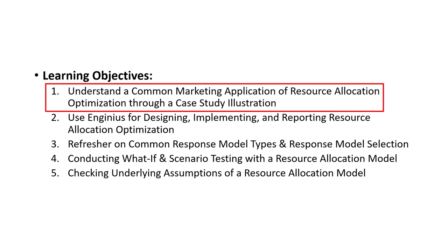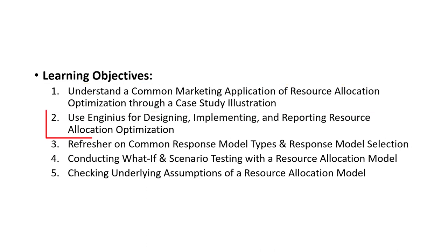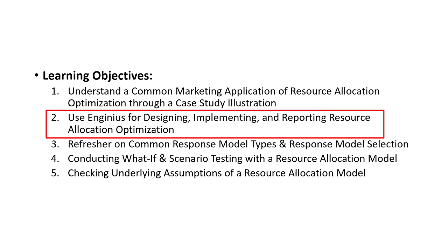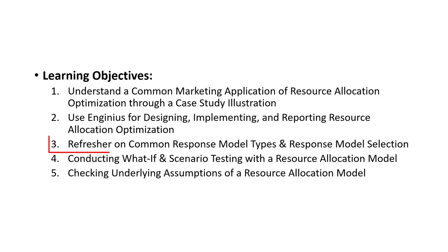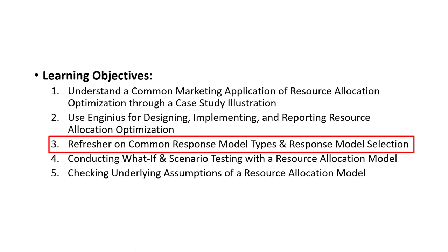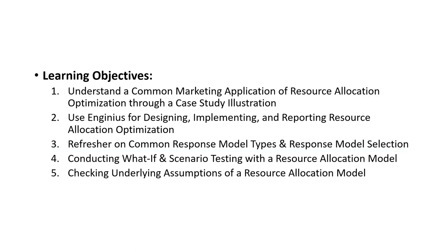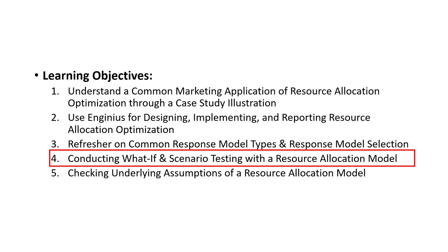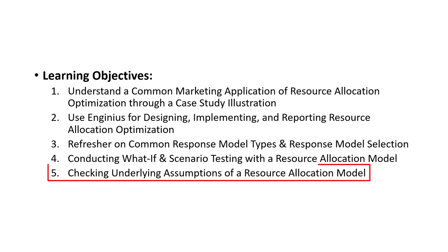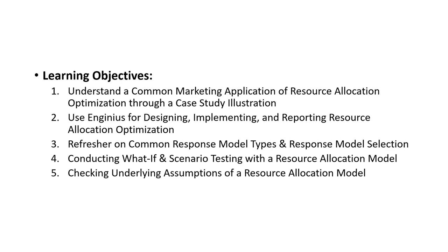Our learning objectives for this video are to understand the common marketing application of resource allocation optimization. We're going to be using InGenius for designing, implementing, and reporting resource allocation optimization. We'll do a refresher on common response model types and selection criteria, conduct what-if and scenario testing, and check underlying assumptions of our resource allocation model.